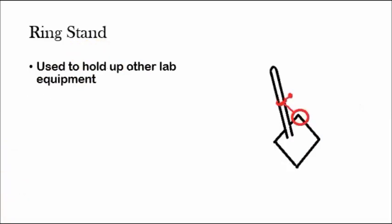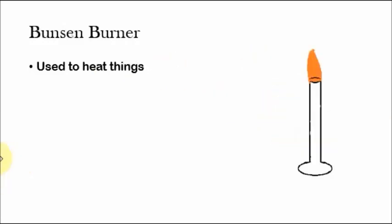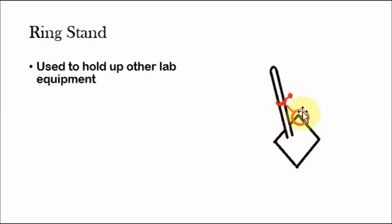A ring stand is used to hold up other lab equipment. So a ring stand is this setup right here, not the red part, but just the stand is called the ring stand. The round thing is, by the way, it's called a clamp.